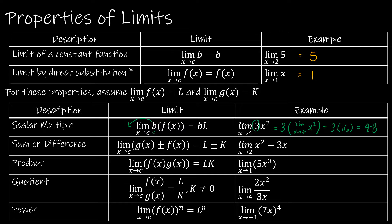Next is sum or difference: if you have two functions being added or subtracted, you can find each limit separately. For example, you can find the limit as x approaches 2 of x squared — which is 4 — and then subtract 3 times the limit as x approaches 2 of x, which is 3 times 2, or 6. So the answer is negative 2. Would I use this property instead of direct substitution? Probably not — direct substitution is simpler.